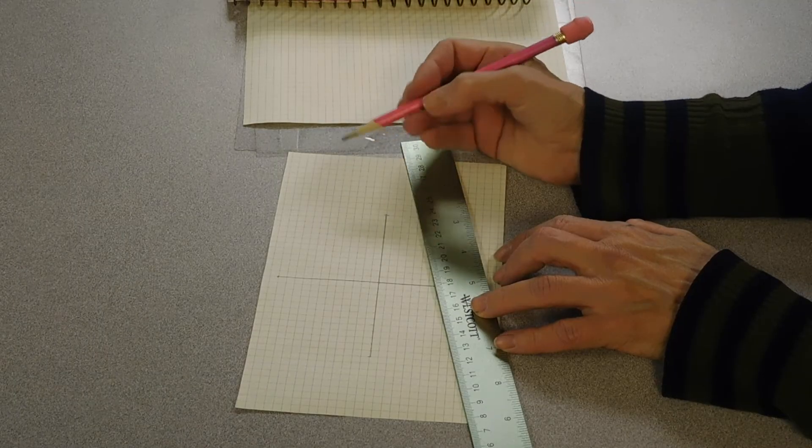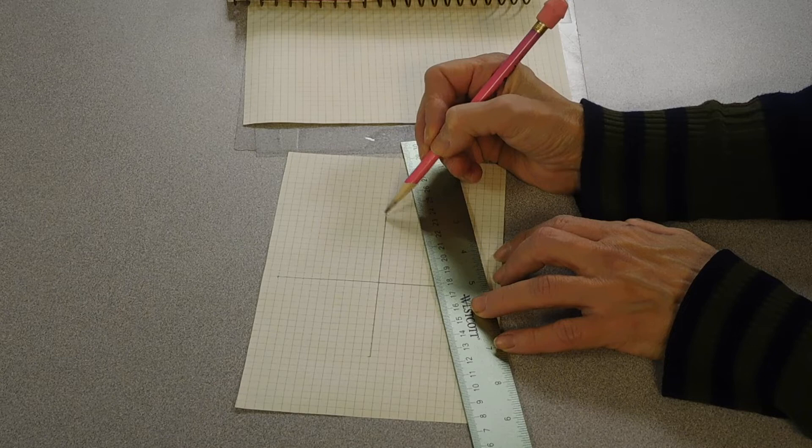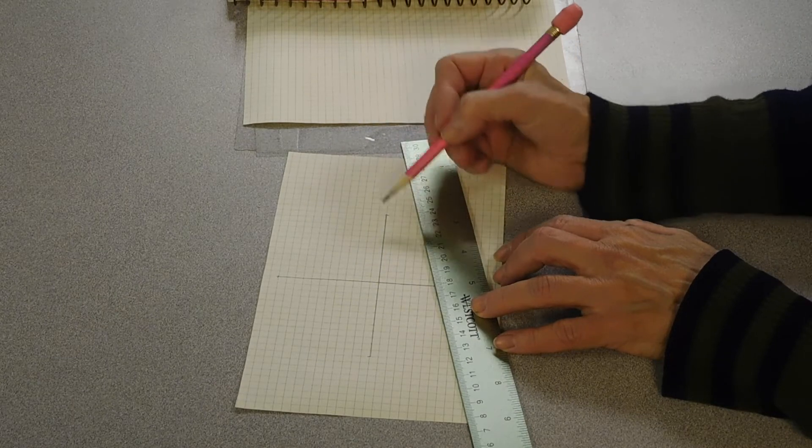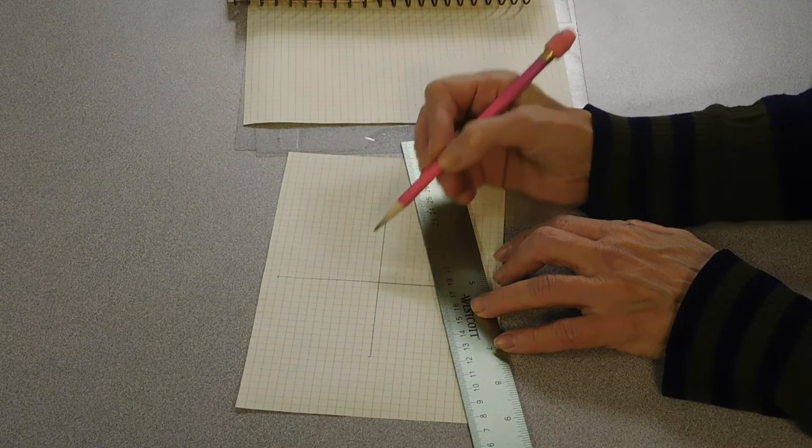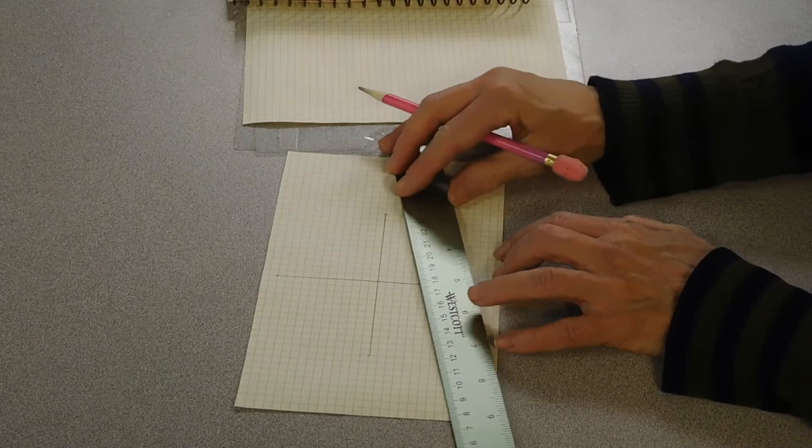What we're going to do is draw a line that connects the top point on this axis with the first point on that axis. Then we'll go this next one to the next one, and we'll keep going.